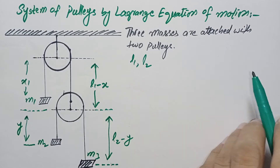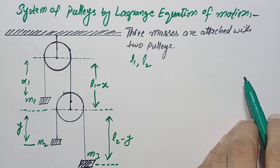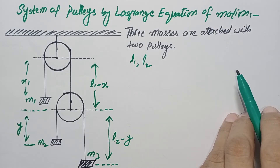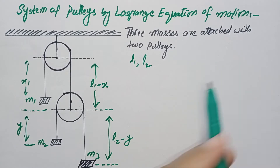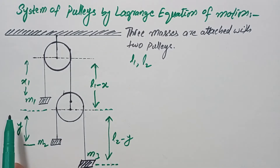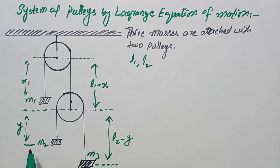There will be two generalized coordinates, and there will be two Lagrange equations of motion with respect to x and y. We will assume the vertical downward direction to be positive.